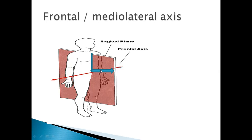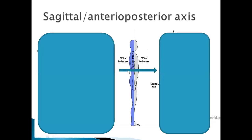This is the sagittal plane which divides the body into two equal halves, and the axis basically is a medial-lateral line which goes from the medial side to the lateral side of your body. This line forms a 90-degree angle with the plane — so this is your frontal axis. Next, the second is the sagittal axis. The sagittal axis is found in the frontal plane.